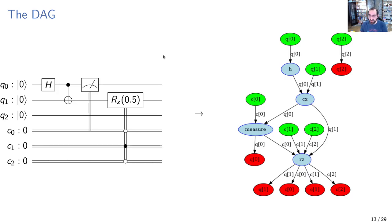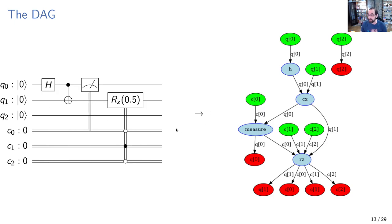Here's an example showing how the DAG makes things more explicit. The circuit adds an RZ gate with a classical condition — we only run the RZ gate if the bit string on the classical bits is 0, 1, 0. Looking at the circuit, it's hard to tell there's any relationship between the H gate and the RZ gate. But in the DAG, that relationship is pretty obvious — you follow the Q0 path and see an arrow between them. The DAG lets us see this data flow much more easily than we could on the circuit diagram.